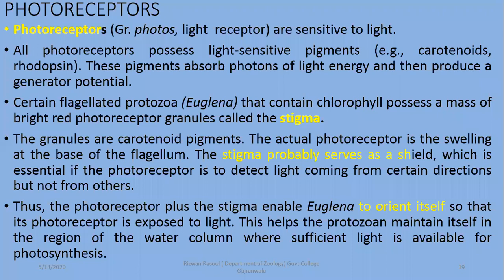Photoreceptors are responsible for the detection of light, or they are sensitive to light changes in the environment. All photoreceptors in the animal kingdom possess light-sensitive pigments, for example carotenoids and rhodopsins.